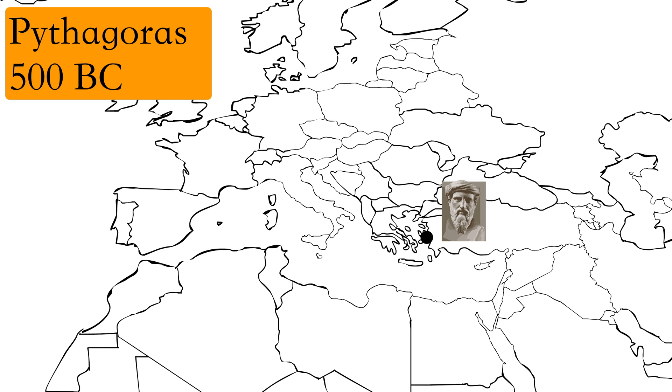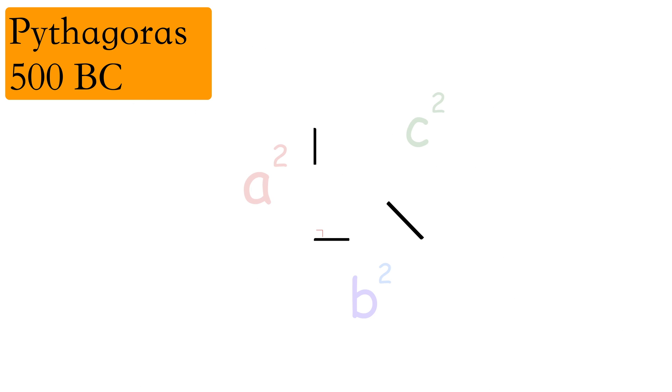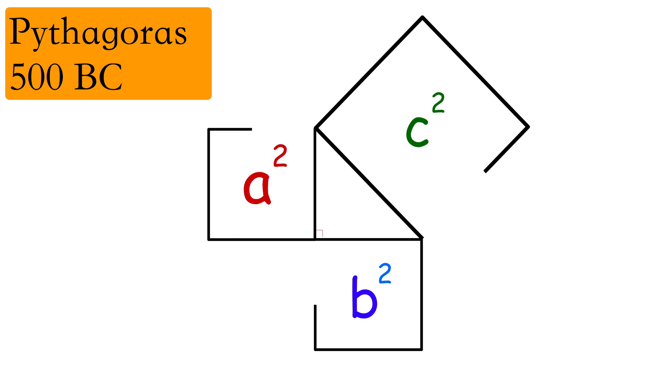Around 500 BC, Pythagoras is credited for discovering the Pythagorean theorem. This is the relationship between the area of the squares on the legs of a right triangle equal to the area of the larger square on the hypotenuse.